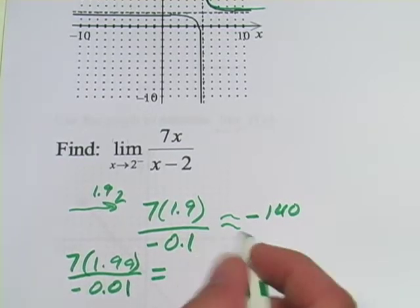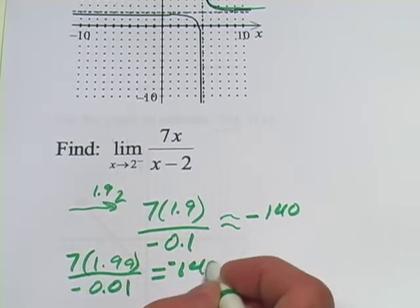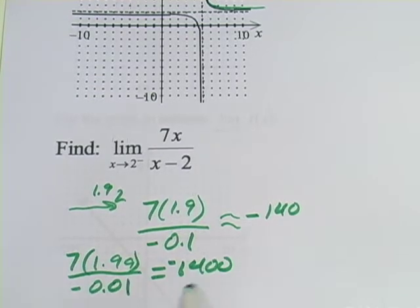In this case, we're going to have 14, sorry, negative 1400. So if you go 1.99, suddenly you're up at negative 1400. And what you can see, if you plug in more values here, if you need to do more to convince yourself.